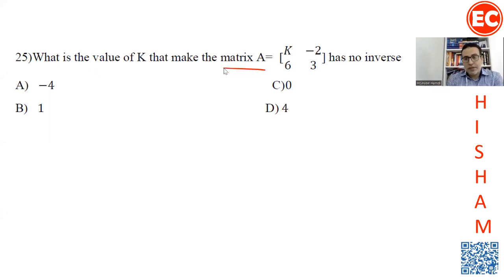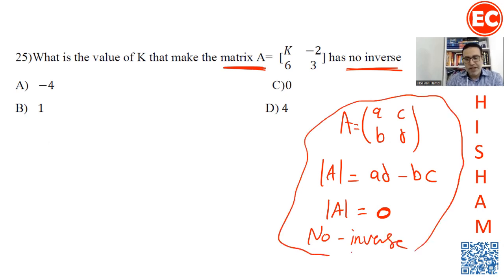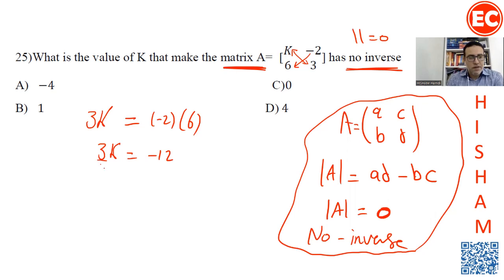When does a matrix not have an inverse? For a matrix with entries a, b, c, d, the determinant is ad minus bc. If the determinant equals 0, the matrix has no inverse. So multiply 3 by k and set it equal to negative 2 by 6. Thus 3k equals negative 12, divide both sides by 3, so k equals negative 4.